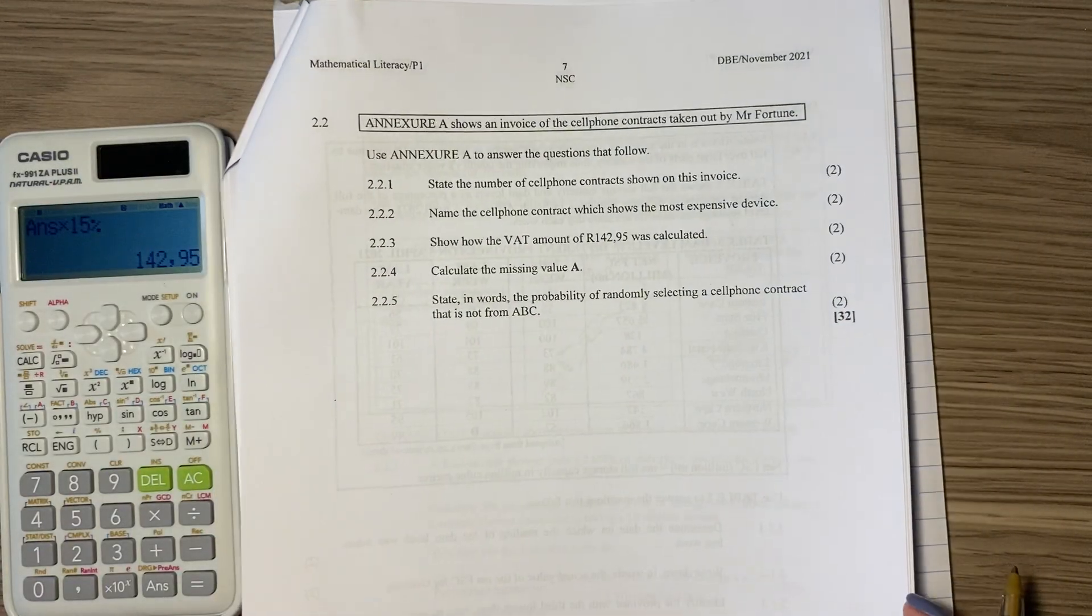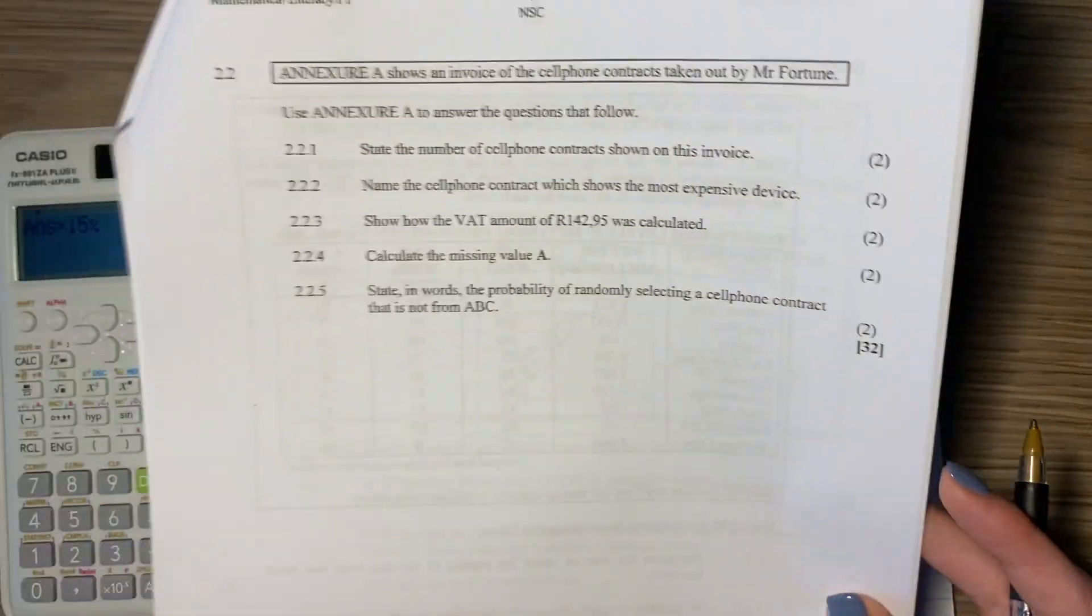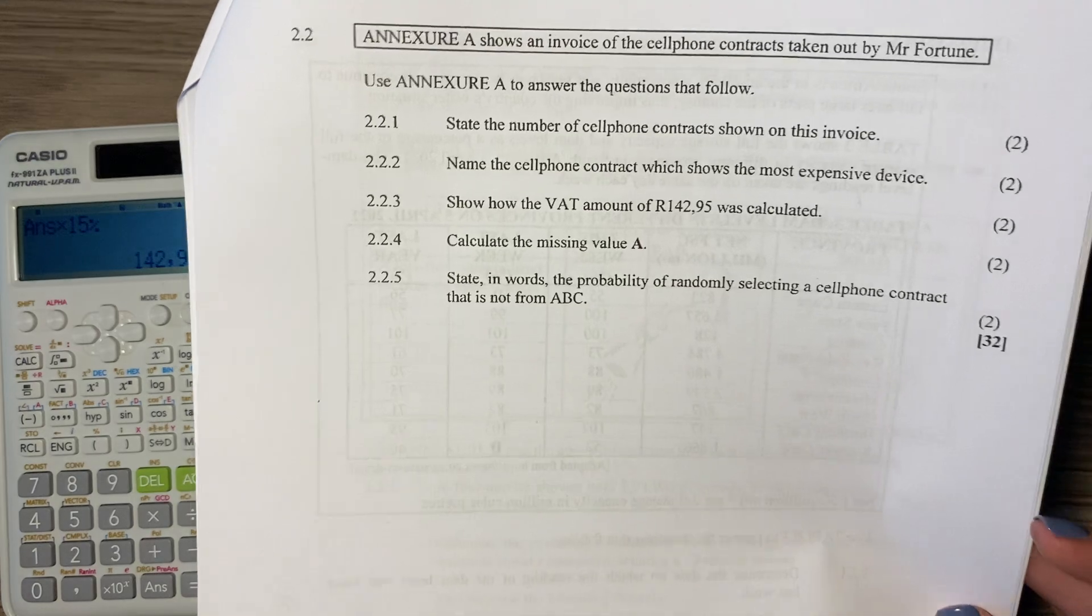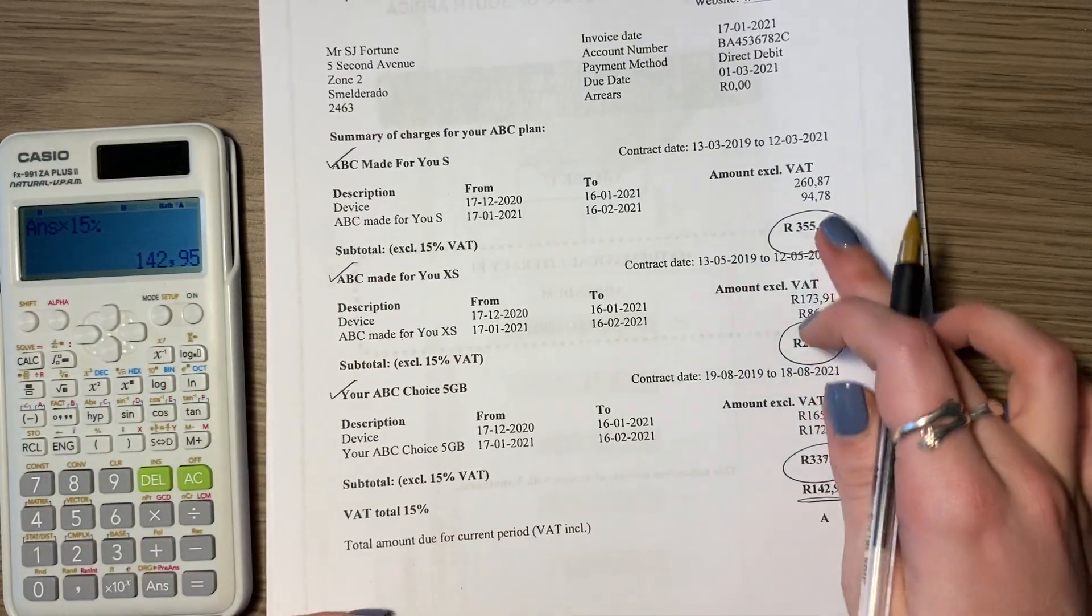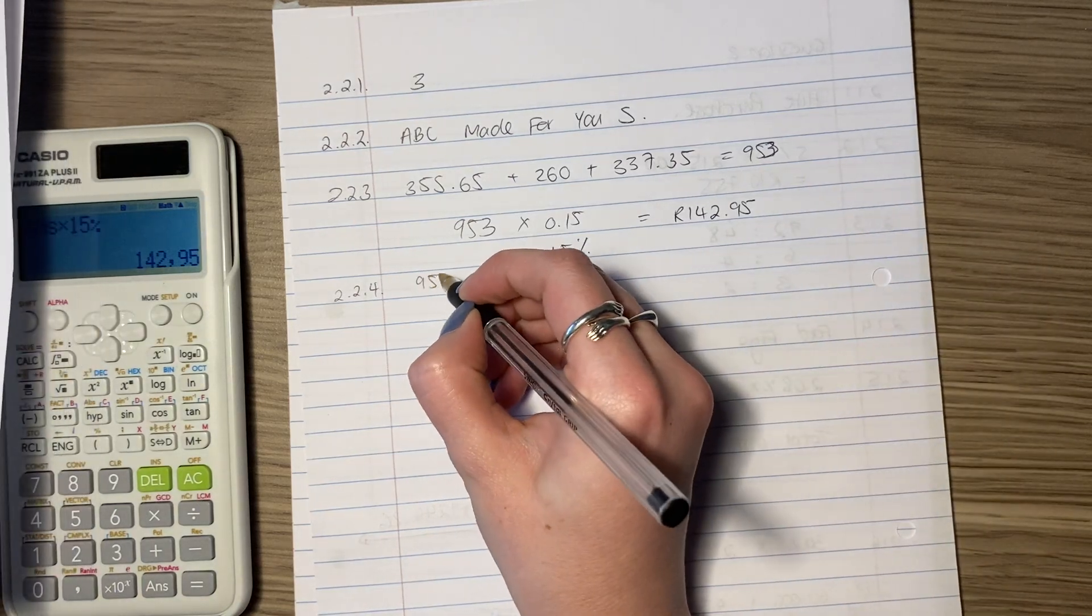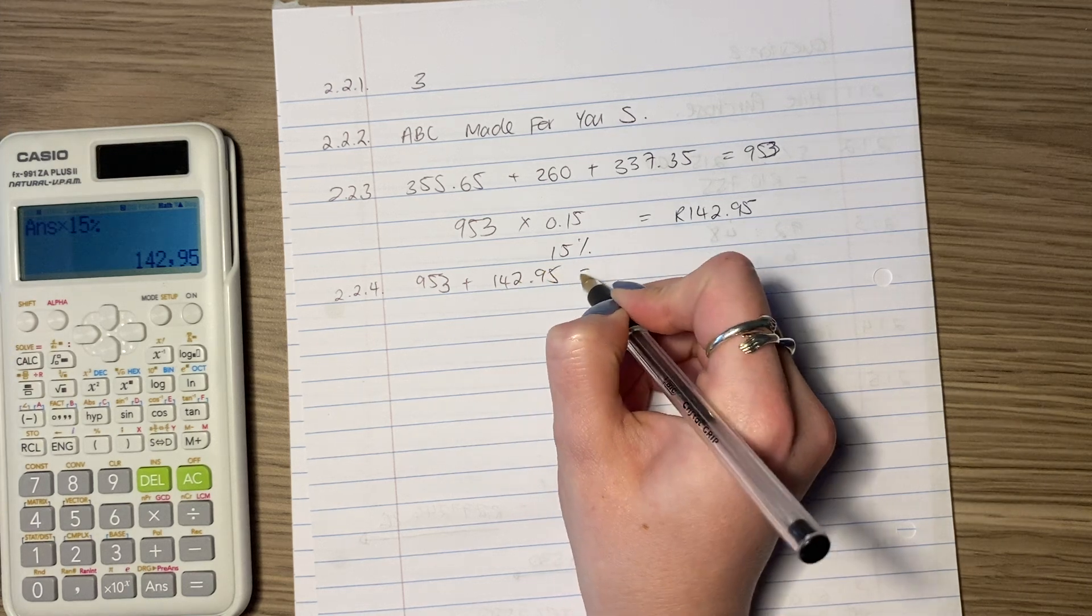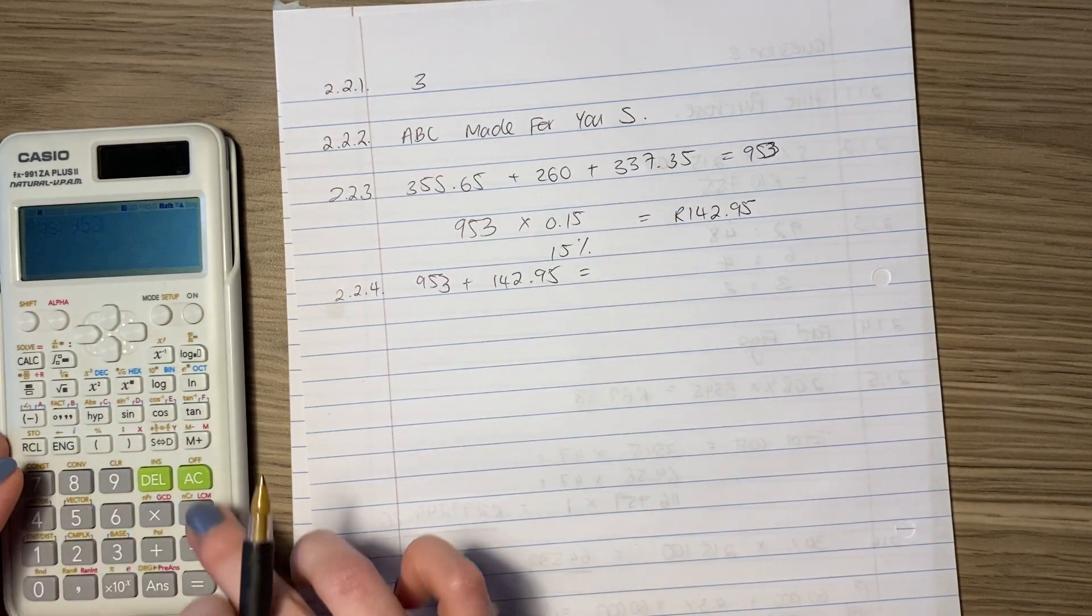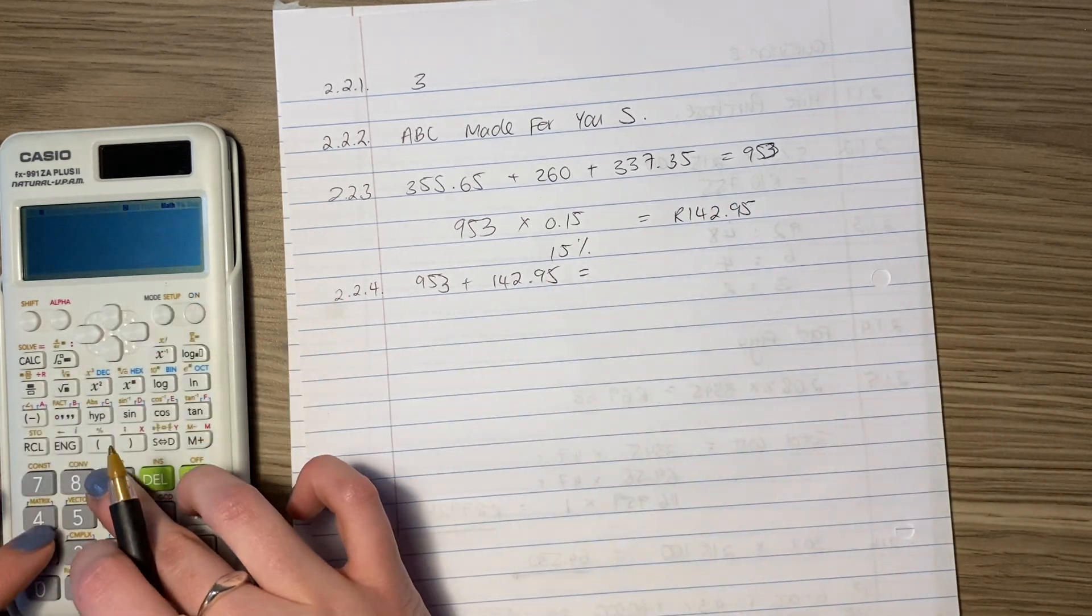We're now done with what they asked us. Let's move on to the next question. Calculate the missing value A. The missing value A is the total, so it's literally what we calculated there plus that. It's not a difficult one, it's basically inclusive, it's how much it will cost with VAT. So put that in, plus 953.